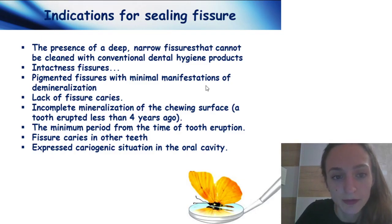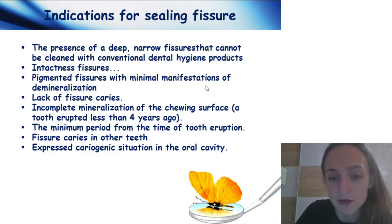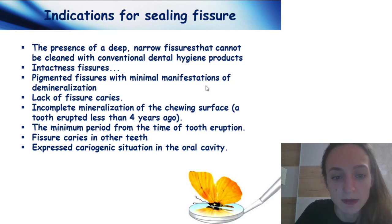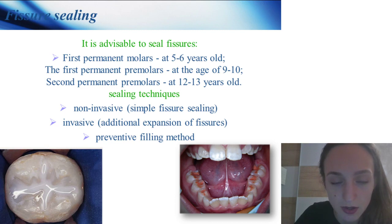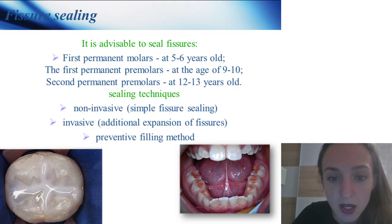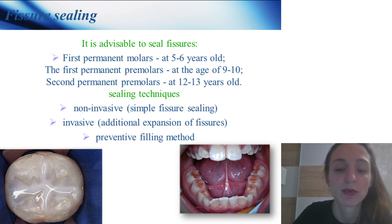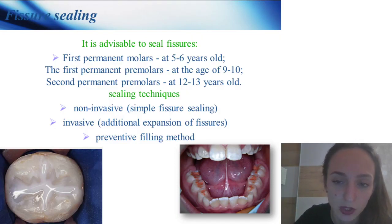Indications for sealing fissures: presence of a deep narrow fissure that cannot be cleaned with conventional dental hygiene products, intactness of fissures, pigmented fissures, lack of fissure caries, incomplete mineralization of the enamel surface, minimum period from time of eruption, fissure caries in other teeth, and an expressed cariogenic situation in the oral cavity. It is advisable to seal fissures of first primary molars at age 5–6 years, first permanent molars at age 9–10, and second molars at age 12–13.